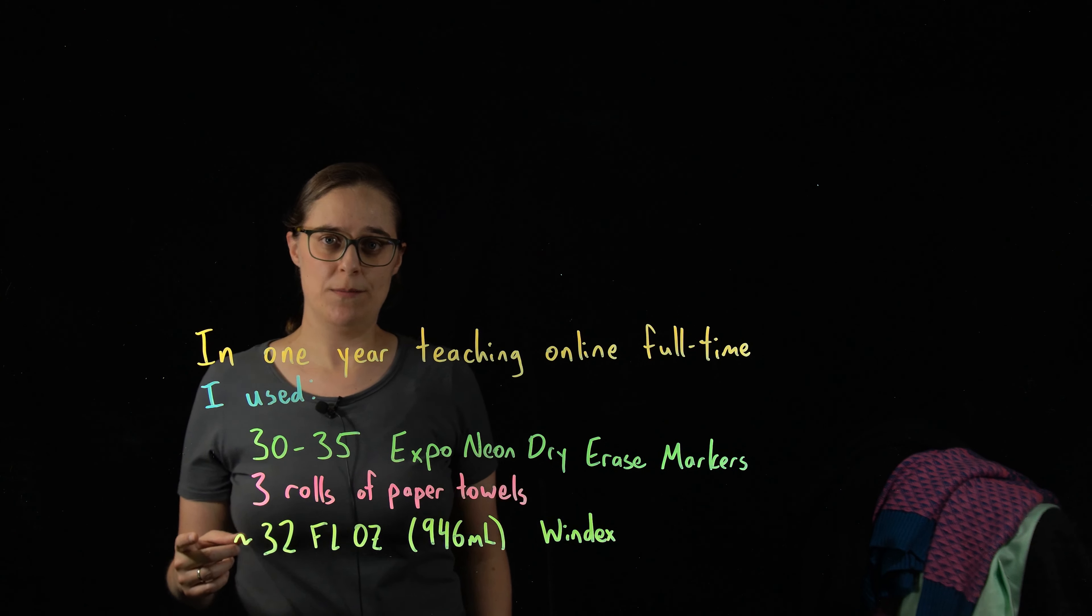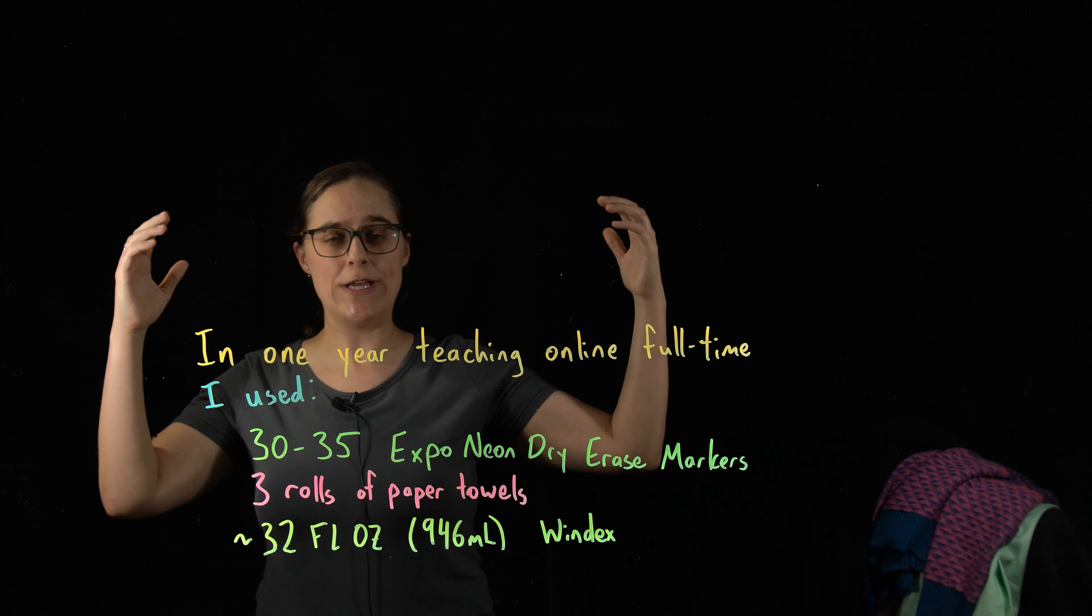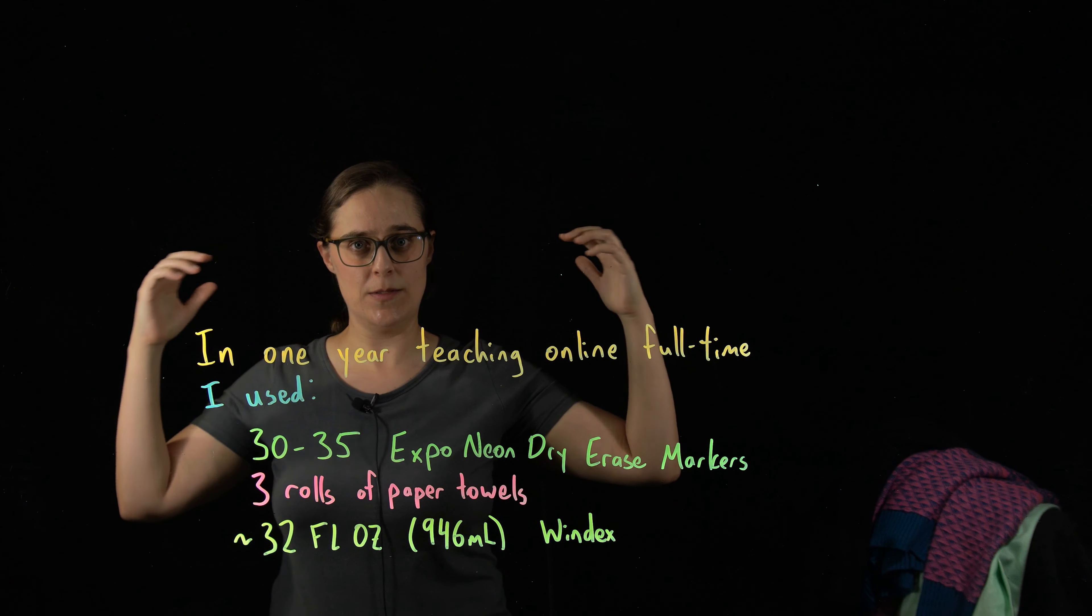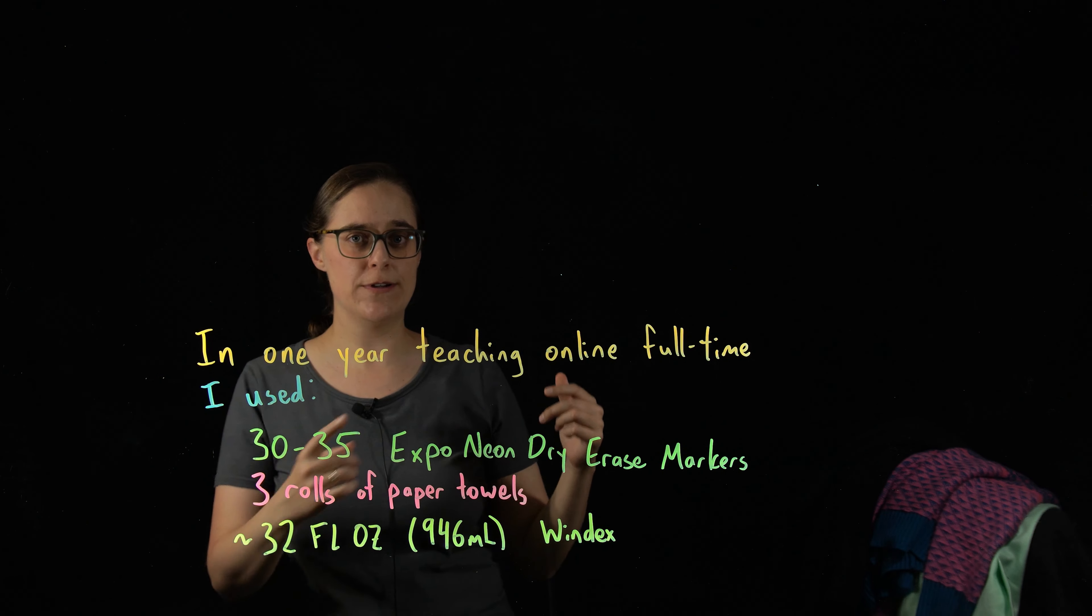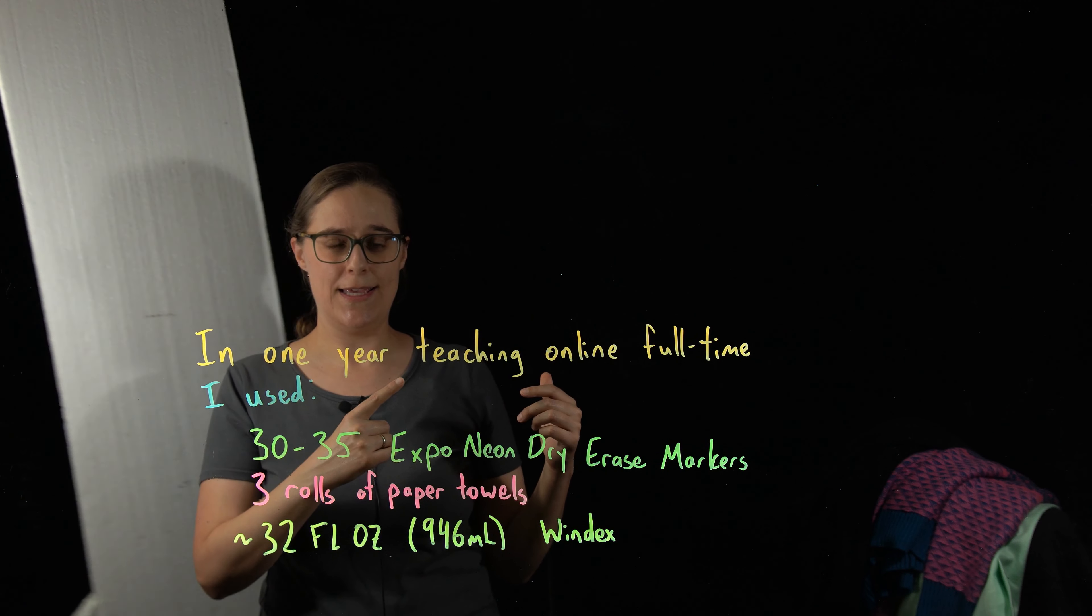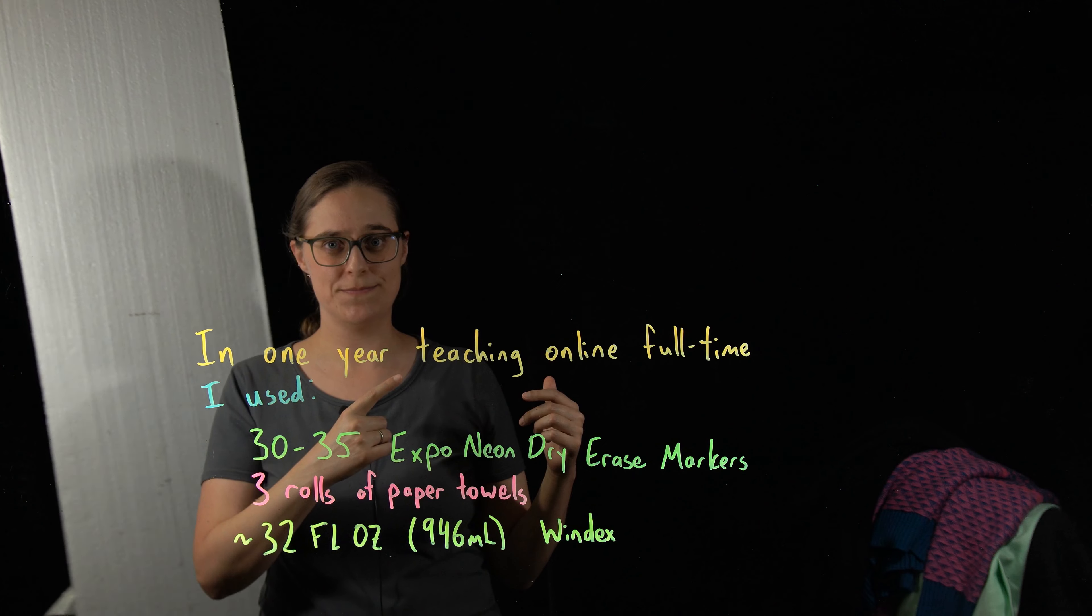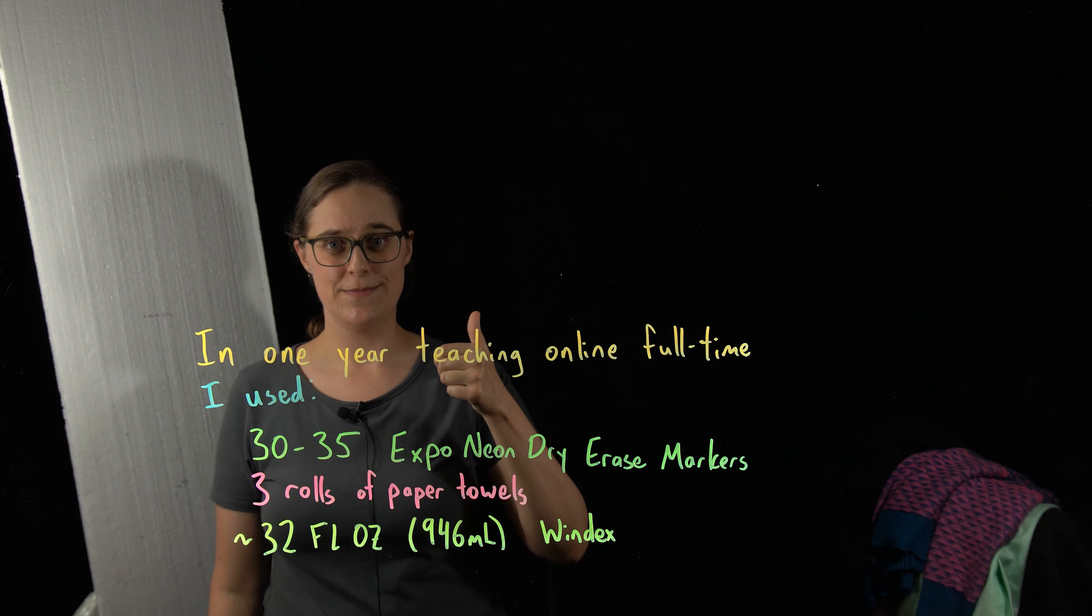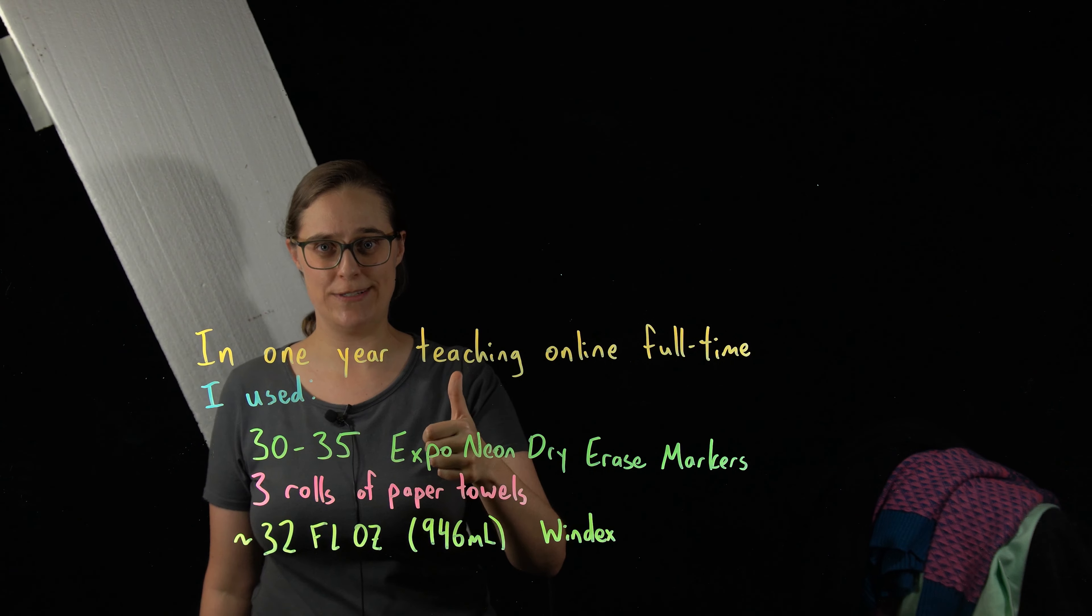One thing that helped improve my image quality was putting a white reflective surface on the ceiling, because the ceiling in my basement is dark. However, it's a piece of styrofoam that's not taped up very well. And this happens sometimes. Put something white on the ceiling, secure it.